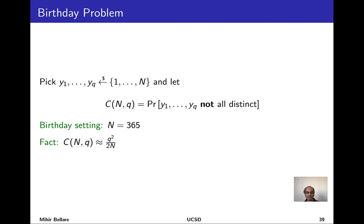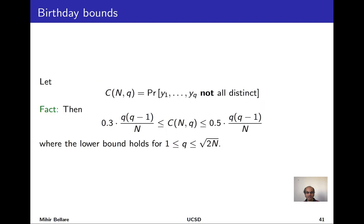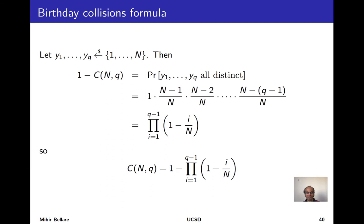We can actually exactly compute this probability. We have a formula. We're picking Y1 through YQ independently at random from a set of size N, and we consider the event that all the Y's are distinct — the complement of the collision event. We compute this via the balls and bins game: we have N bins and Q balls, throwing balls at random into bins one by one. A collision happens if two balls land in the same bin. So distinctness means all balls land in distinct bins.